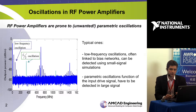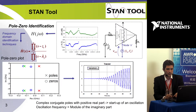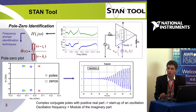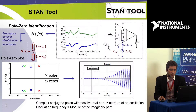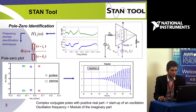The method and tool we provide is based on the pole-zero identification principle. It consists of connecting a probe to a node of your PA and sweeping the frequency of this small current probe to obtain the frequency response at that node. We then fit this frequency response with a polynomial rational transfer function and plot the pole-zero map of this fitted transfer function.